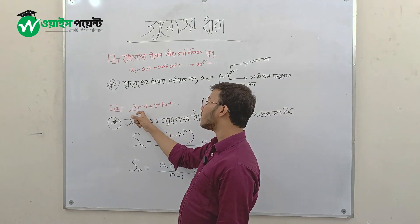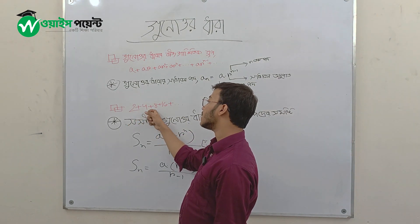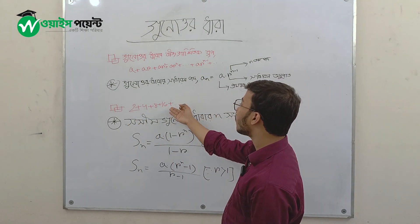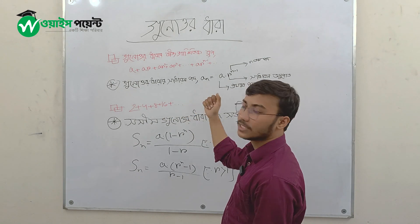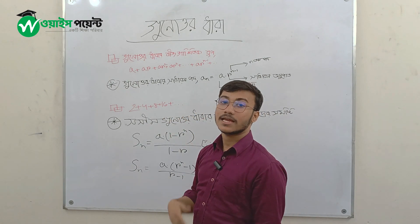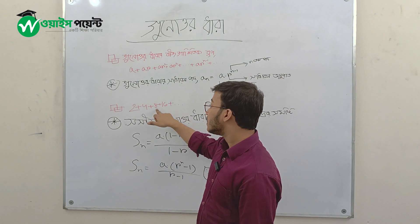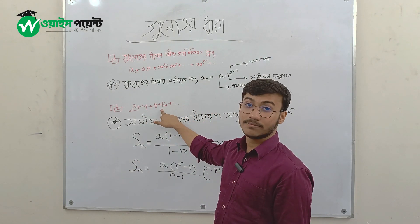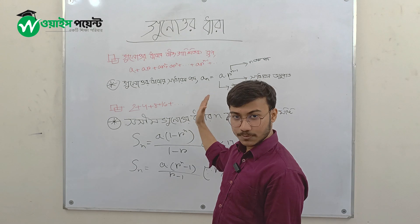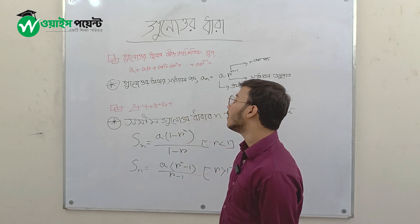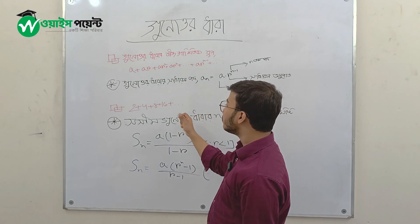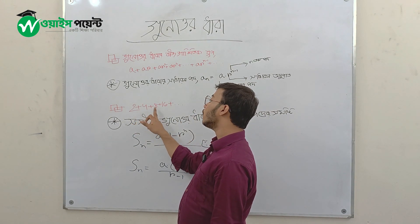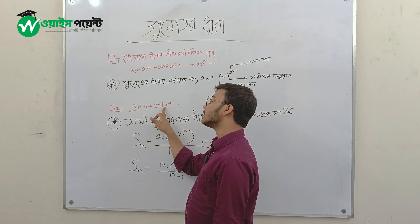2, 4, 8, 16. The same part is the same part of the sequence. The next part is the same part: 2 then 4, 4 then 8, 8 then 16.